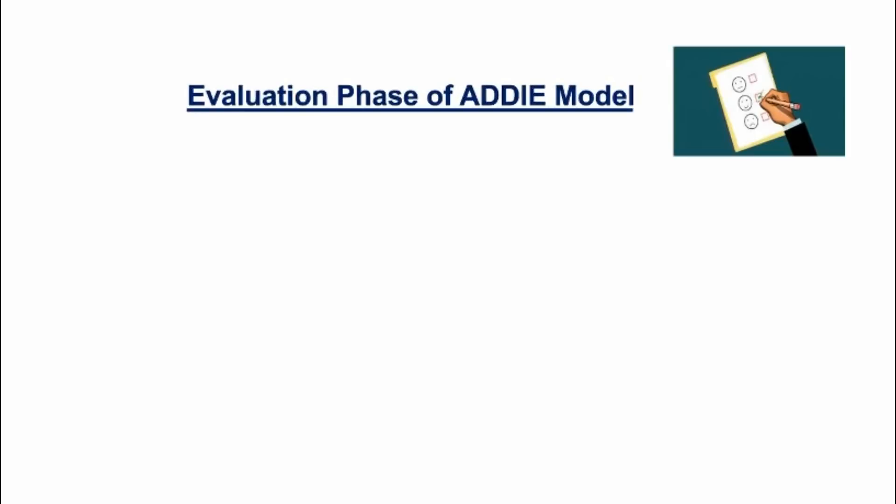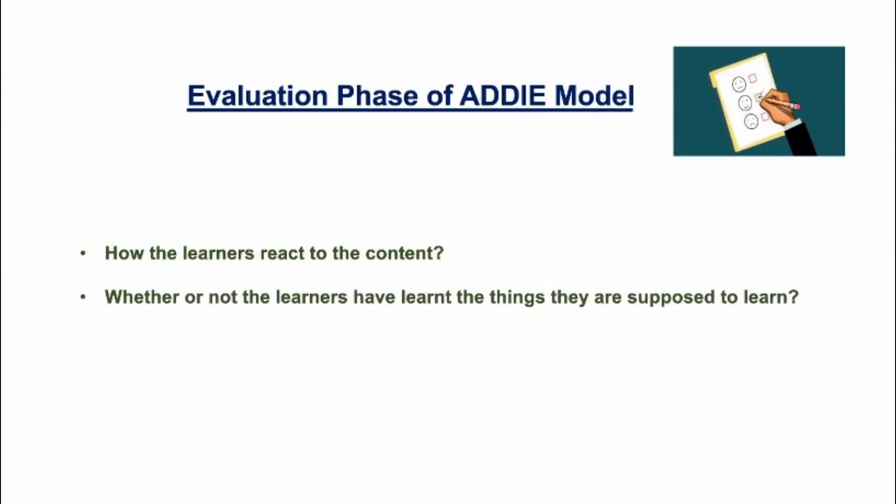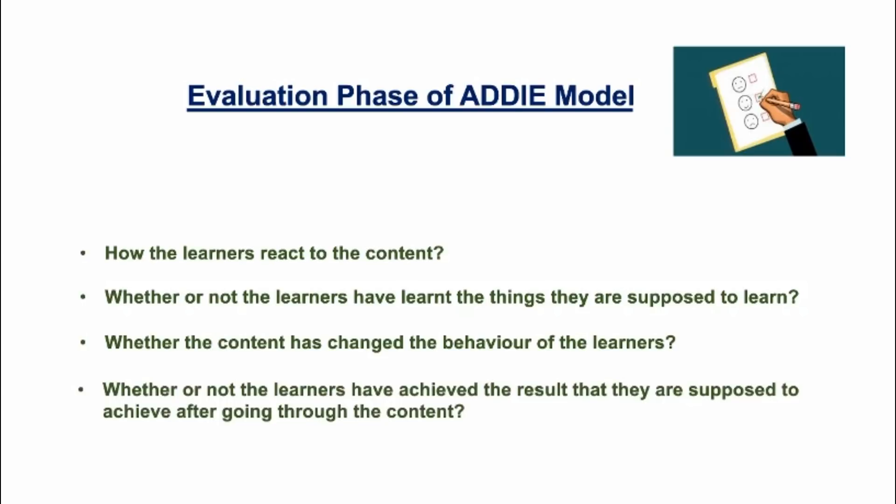Then finally comes the evaluation stage. Evaluation is the most important stage of the ADDIE model to check the fruitfulness of the content. For that, the content creator may find out how the learners react to his content, then by determining whether or not the learners have learned the things that they are supposed to learn, if the content has changed the behavior of the learners, and finally by determining whether or not the learners have achieved the result that they are supposed to achieve after going through the content.